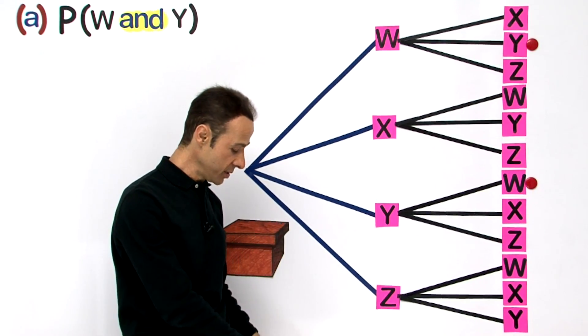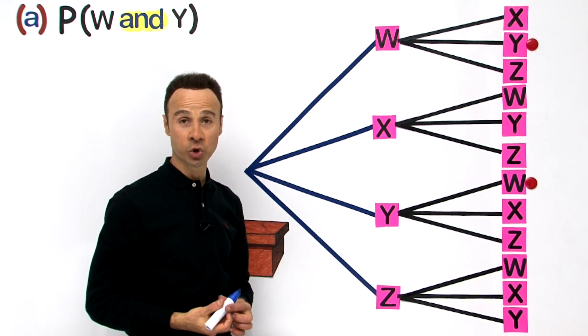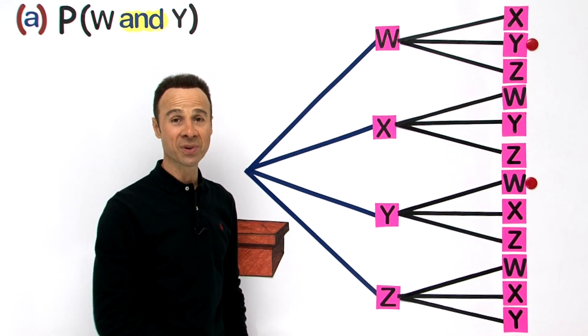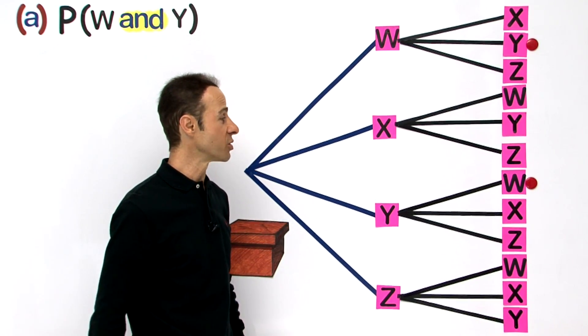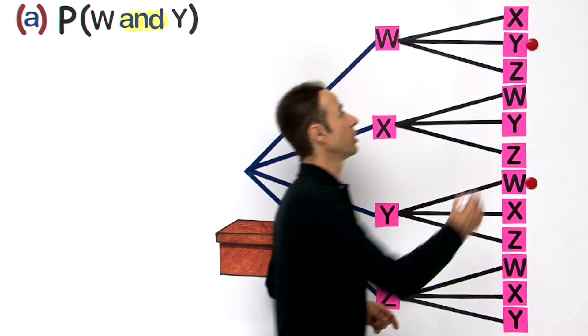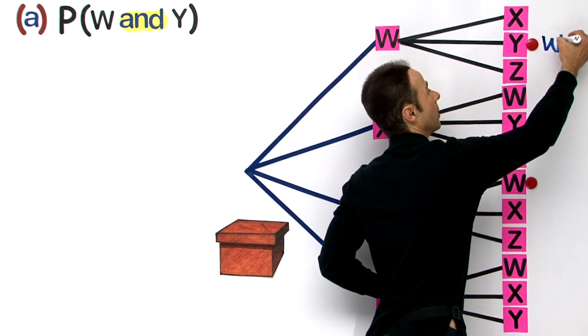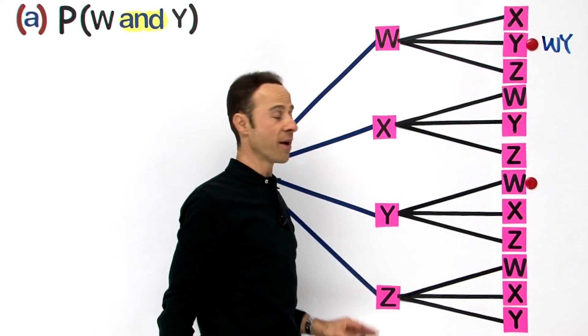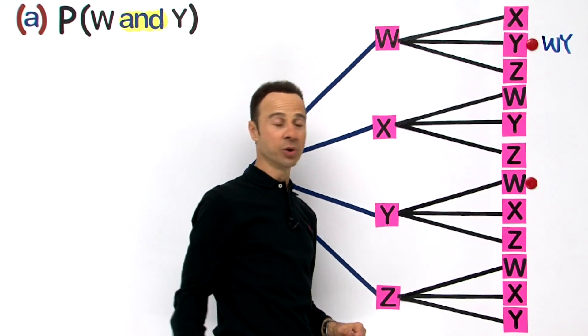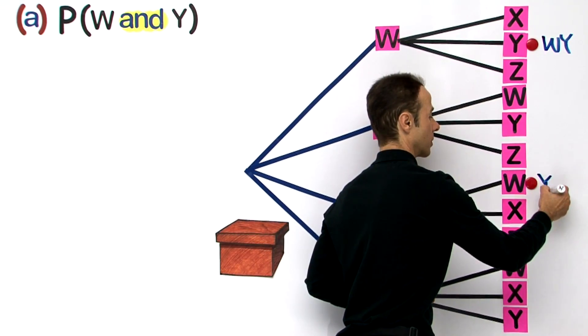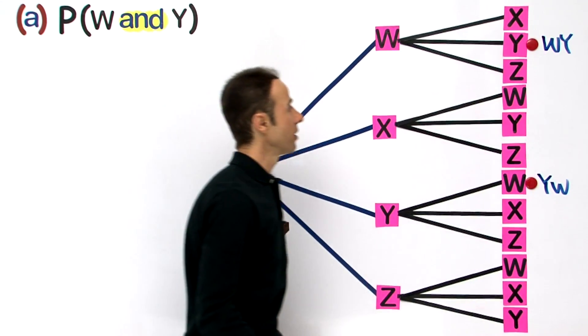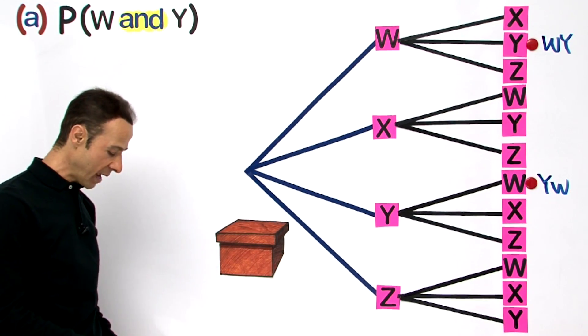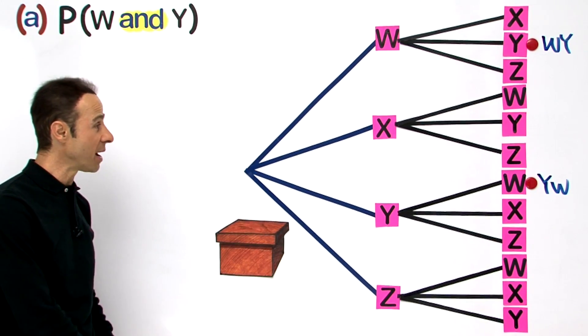There are the two possibilities. Remember, I am going to show you two ways of finding the answer from this exact same probability tree diagram. So up here we have a W and a Y, and over here we have a Y followed by a W. There are our favorable outcomes.